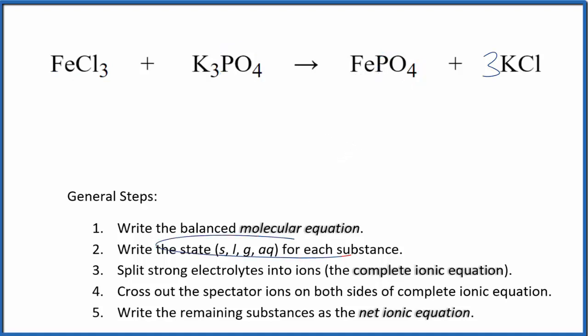Next, we write the state for each substance. If you know your solubility rules, chlorides are very soluble, and phosphates in general are insoluble unless they're bonded to something in group 1 like potassium or sodium. So this phosphate, potassium phosphate, that's going to be aqueous. It's soluble, dissociates into its ions.